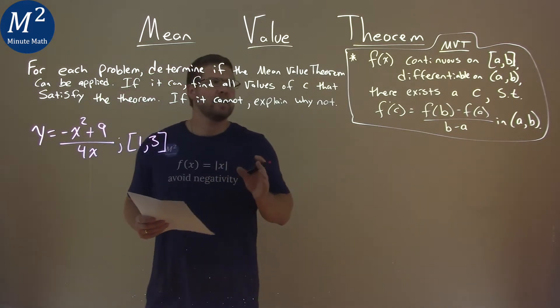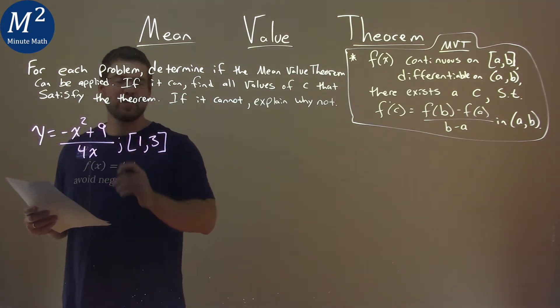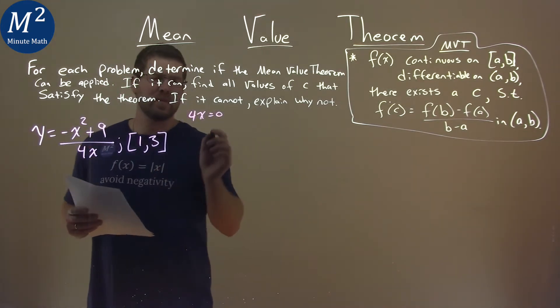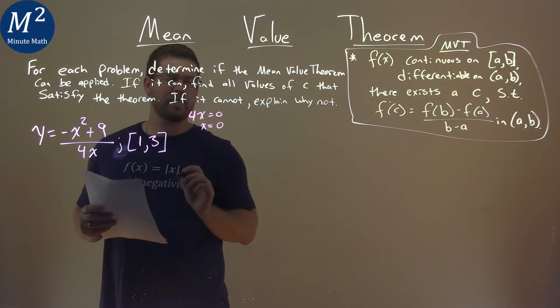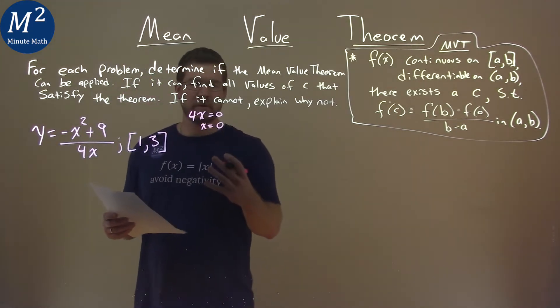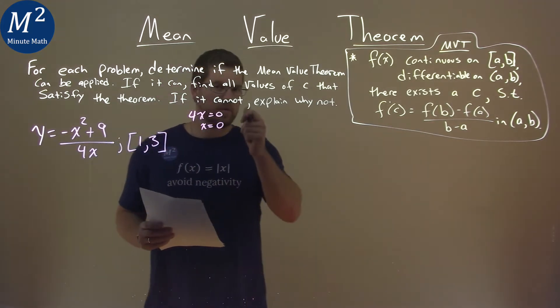Well, the main thing is, is it continuous and differentiable? It's continuous everywhere in the rational function except where it's dividing by 0. And that occurs when 4x is equal to 0, and x equals 0. So at x equals 0, we have an issue where it's not continuous and not differentiable there, but luckily for us, that is not within our interval, so we are fine.